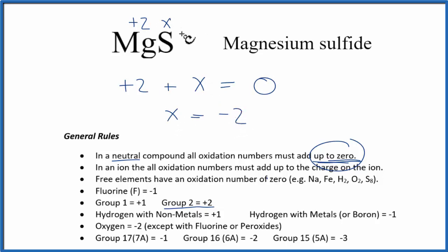Sulfur has an oxidation number of minus two, just like we thought it would. So let's write that in there, minus two. And those are the oxidation numbers for magnesium sulfide, MgS.